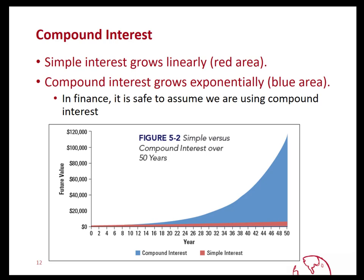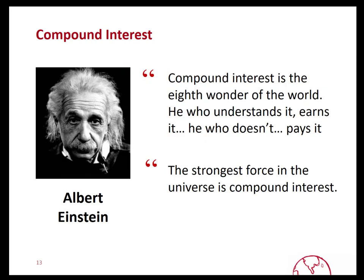Looking at a chart of how your money grows through compounding: simple interest is the flat line where you earn only a fixed amount every period, so your money grows very slowly. With compound interest it grows exponentially — the blue area rises rapidly to the right — because you're earning interest on interest, and as the years go by you'll have more at the end. As Albert Einstein said, compound interest is the eighth wonder of the world: he who understands it earns it, he who doesn't pays it, and it is the strongest force in the universe.